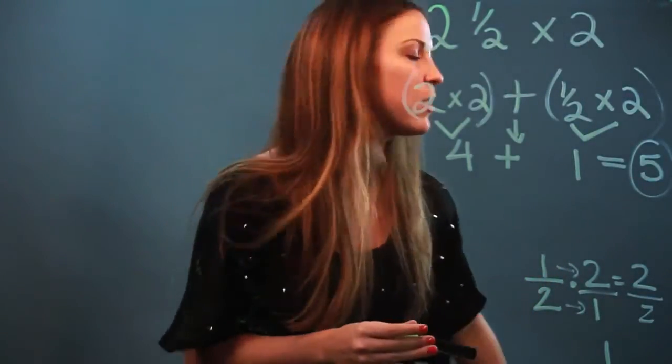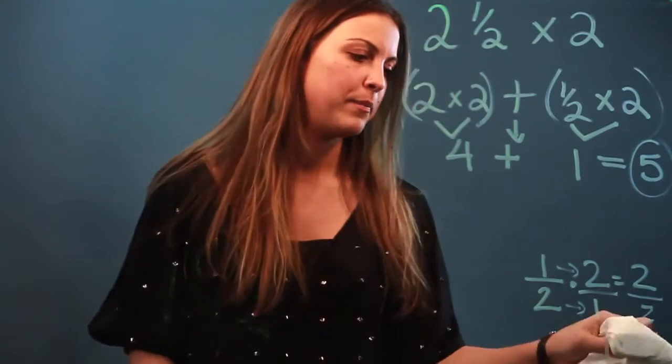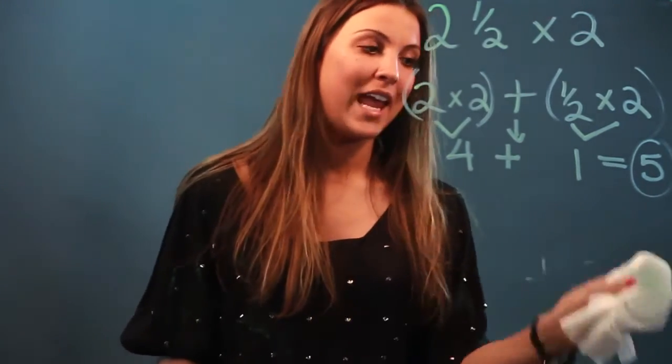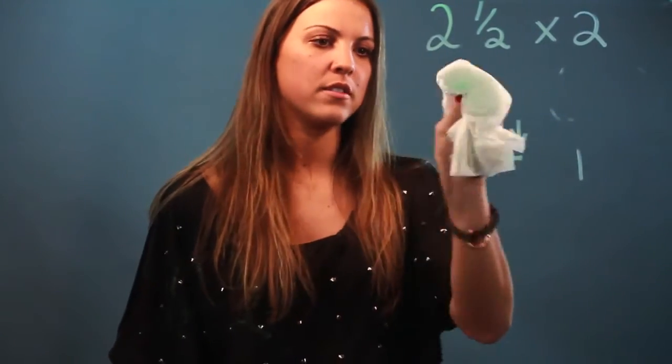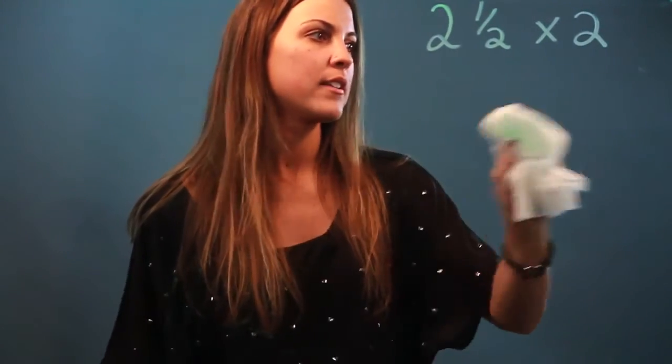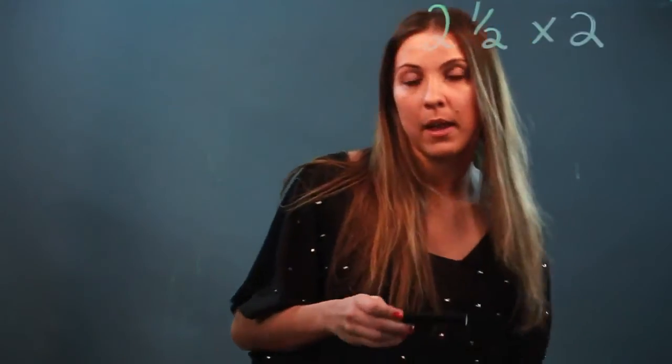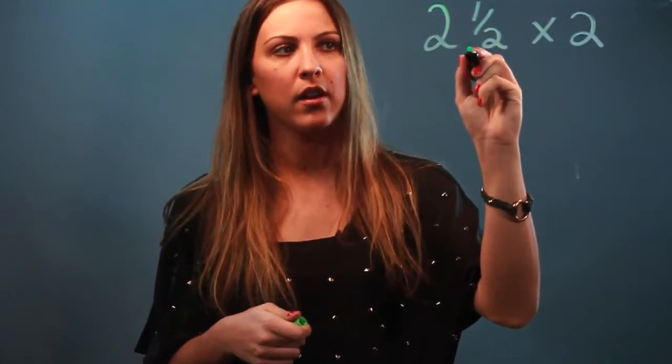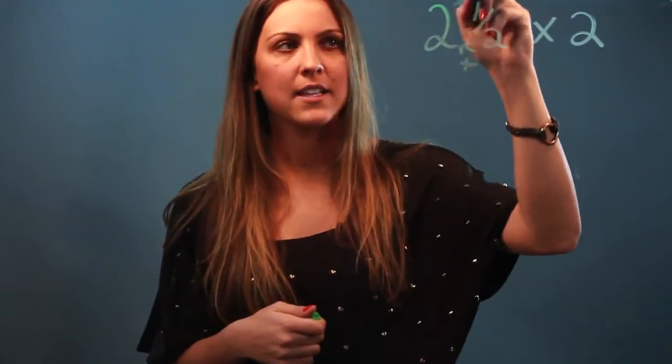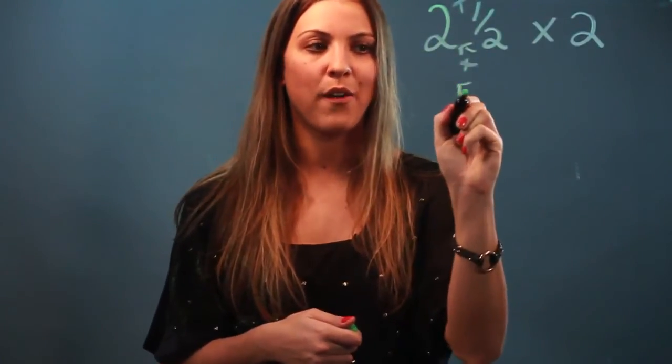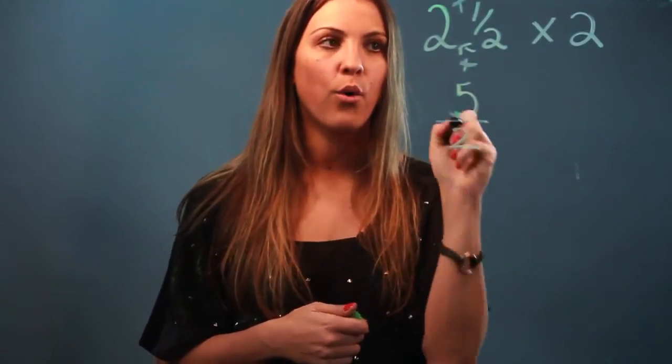All right, so get that method down and I'm going to show you the second way to do this, which is to change your mixed number into an improper fraction first. So to change two and a half into an improper fraction, I take the denominator times the big number. Two times two is four. Add it to the numerator. Four plus one is five.